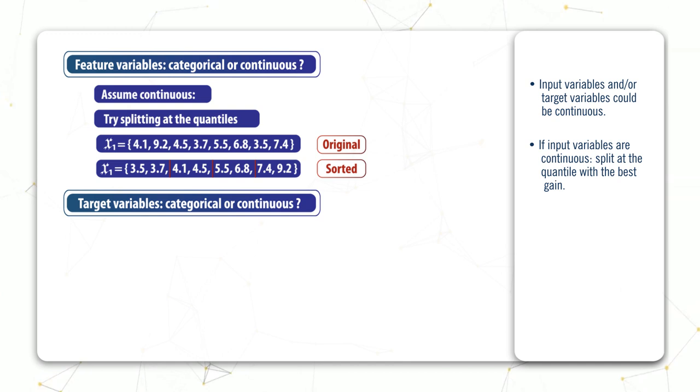We can then try splitting at each of these quantile boundaries. During training, as usual, the algorithm will attempt to split on every feature and choose the one that gives the best gain. But if one or more features are continuous, it will try splitting on every quantile of these continuous features, meaning it needs to try more potential splits.